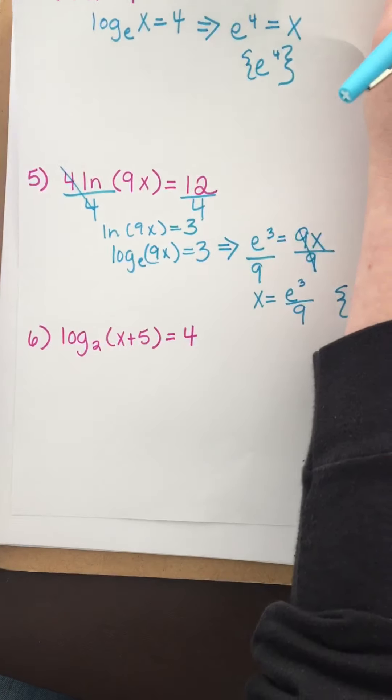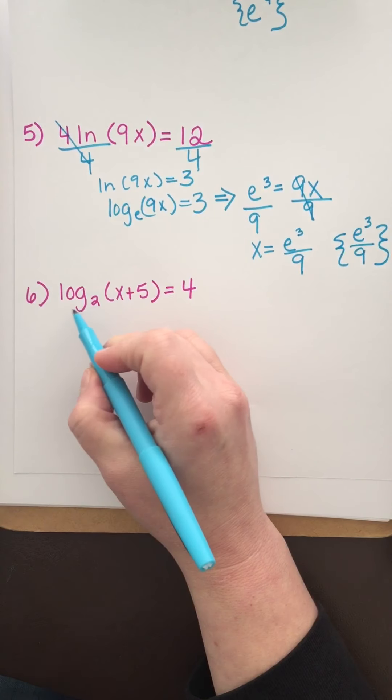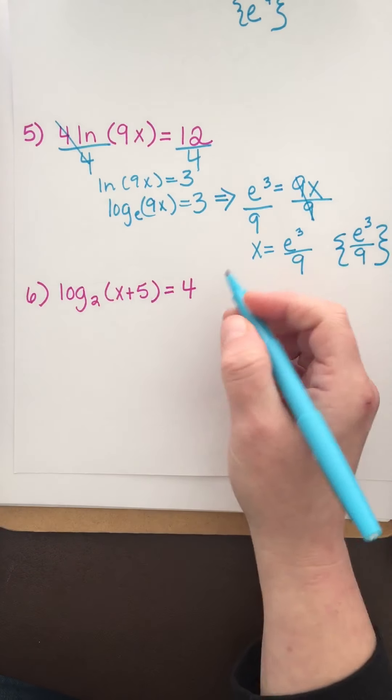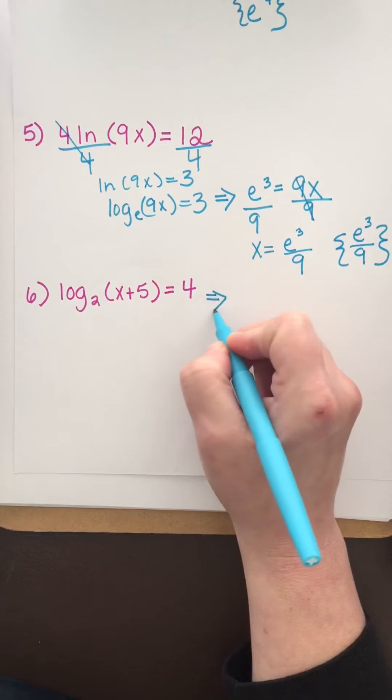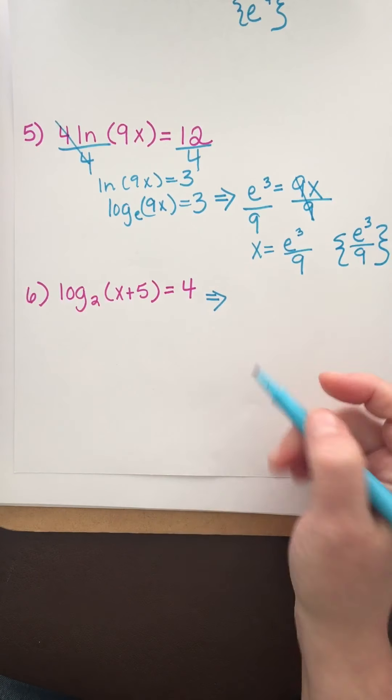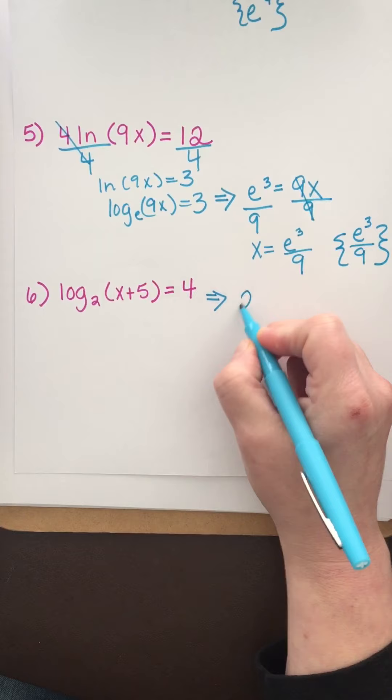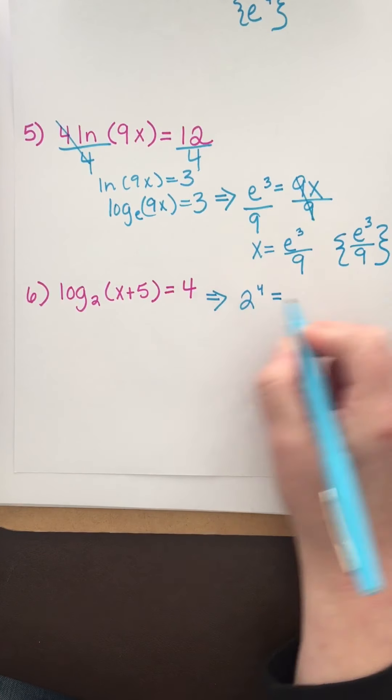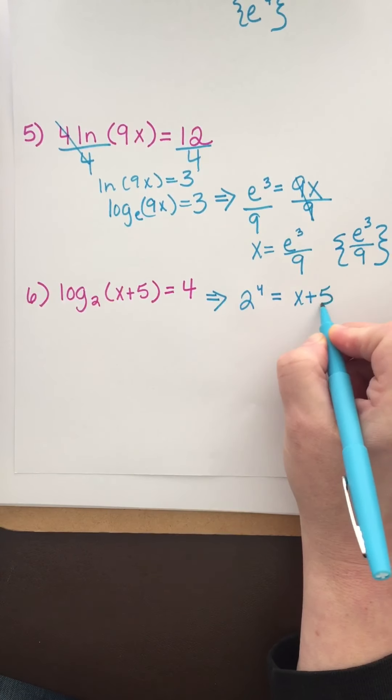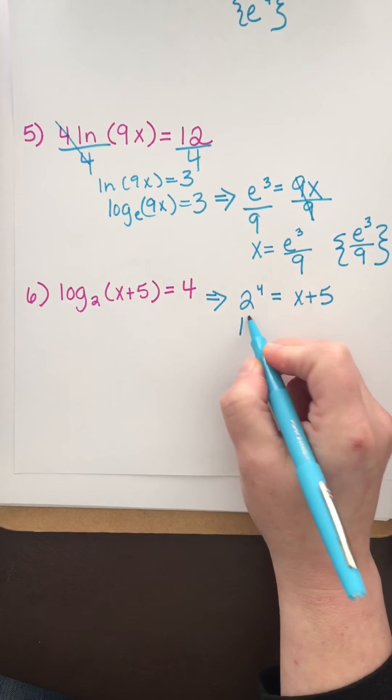Let's do one more. We have log base 2 of (x plus 5) equals 4. The log is isolated, so I change it to exponential form: 2 to the 4th equals x plus 5.